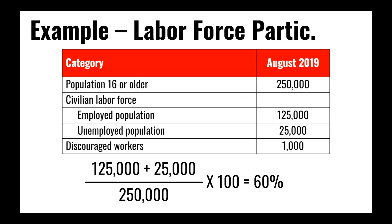Looking at some sample data: in a world where there are 250,000 people over the age of 16, 125,000 are employed and 25,000 are unemployed. We take that employed plus unemployed number and divide by the overall population. In this case, we get a 60% labor force participation rate. The remaining 40% of the population over 16 is either discouraged, marginally attached, retired, a student, a stay-at-home parent, or doing anything other than looking for work.